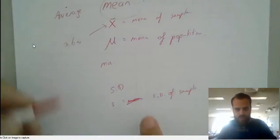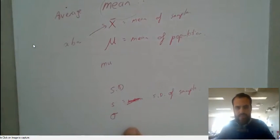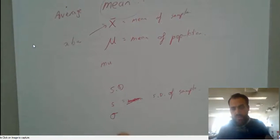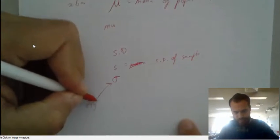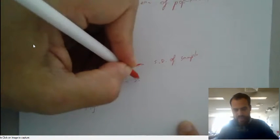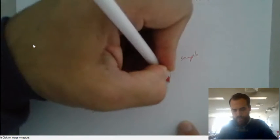And we could also use this guy, the O with the line. That's called sigma. And that's for the standard deviation of a population.